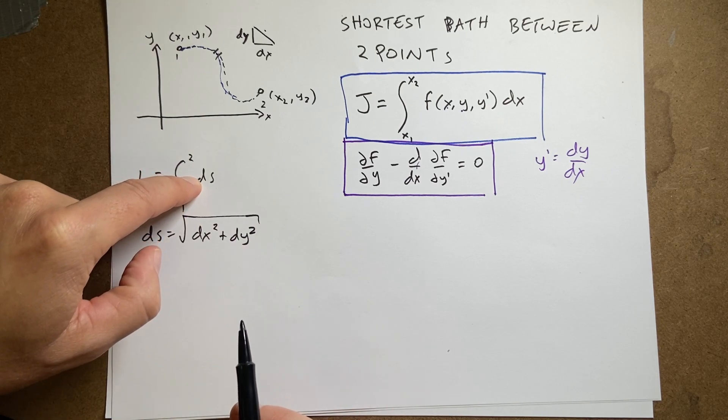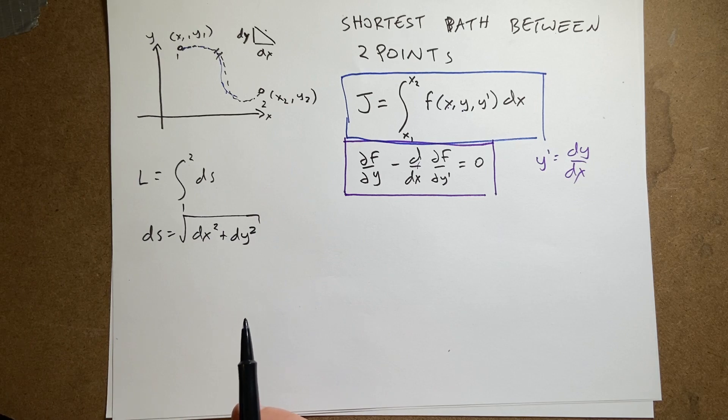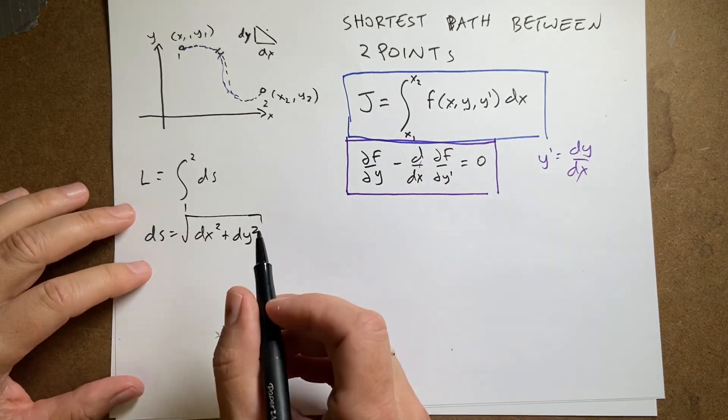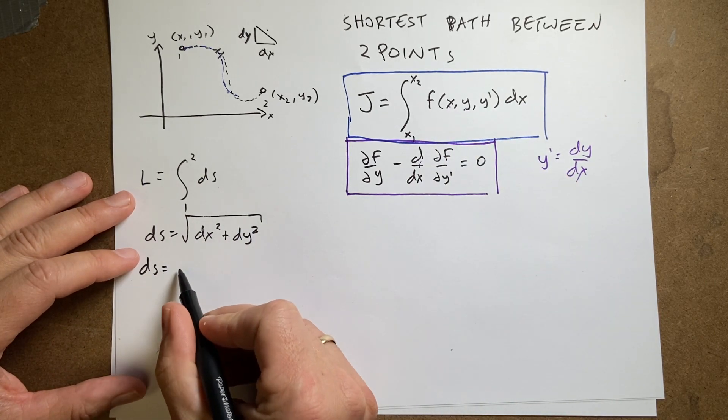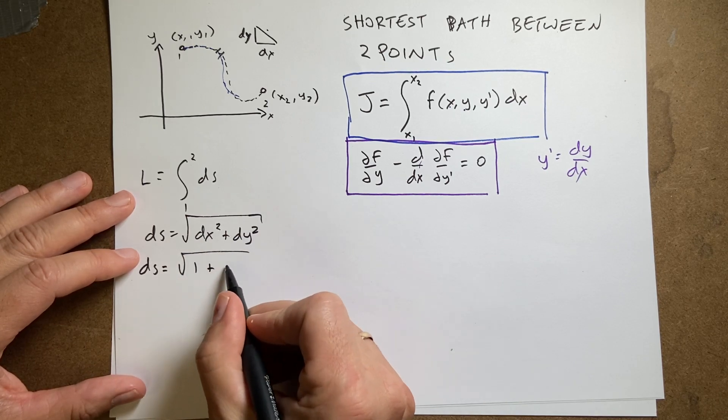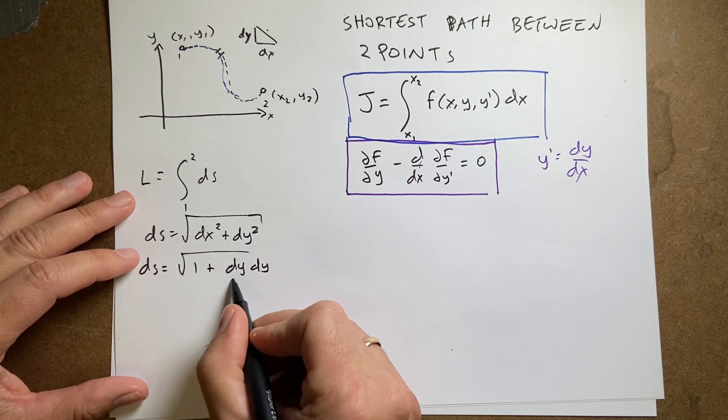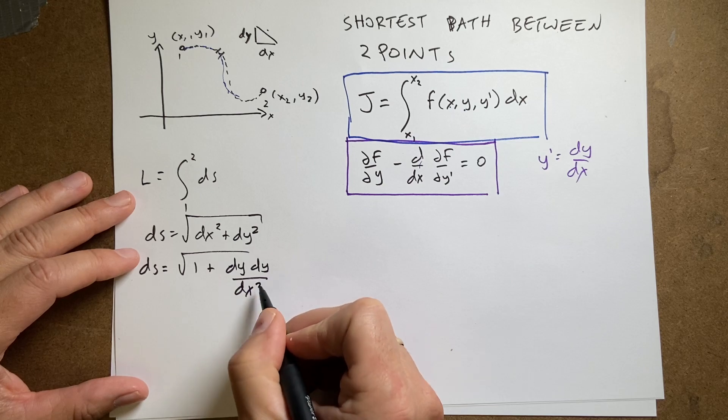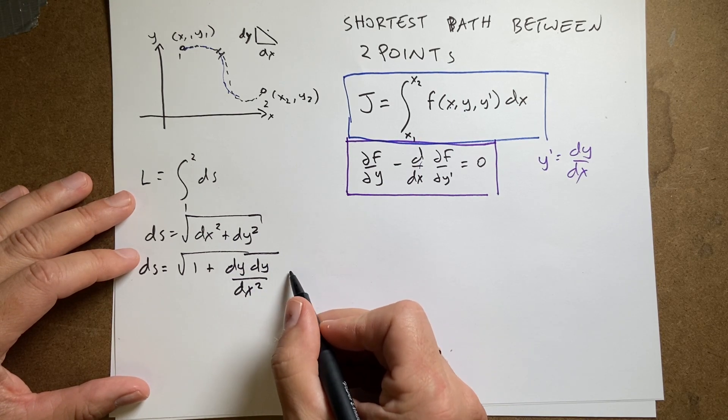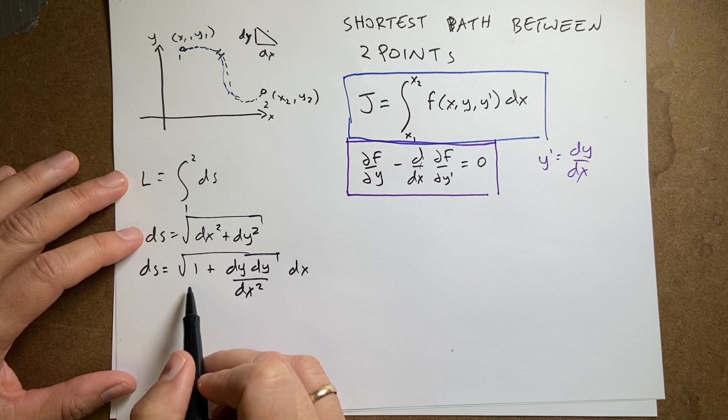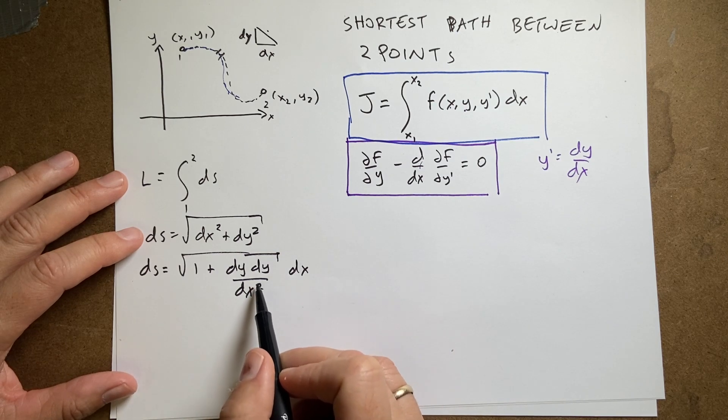But, I can't do that, right? Because I don't have it in this form. I have a dx and I have a dy. I just want dx. So, let's write this as ds equals the square root of 1 plus dy dx squared. I had a trick. I factored out the dx, right? Because I divide everything by dx squared.